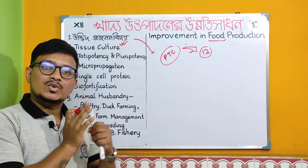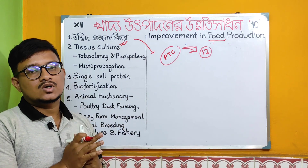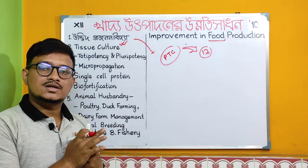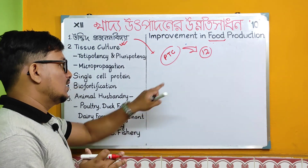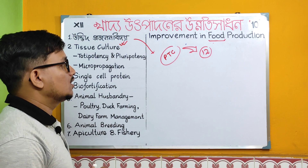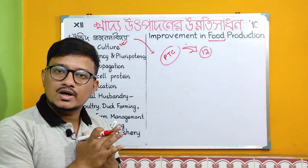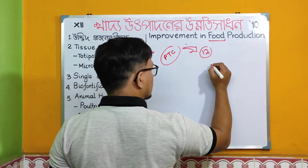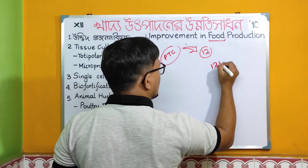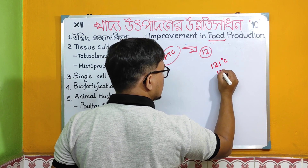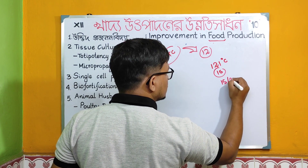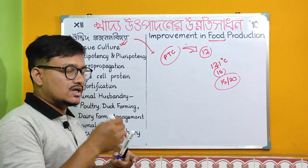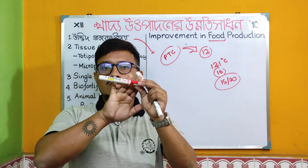Different biotechnology application-based content is covered. For plant tissue culture, the key focus is micropropagation. An important point is sterilization — the conditions are 121 degrees Celsius, 15 Pascal pressure, and 15 to 20 minutes holding time.